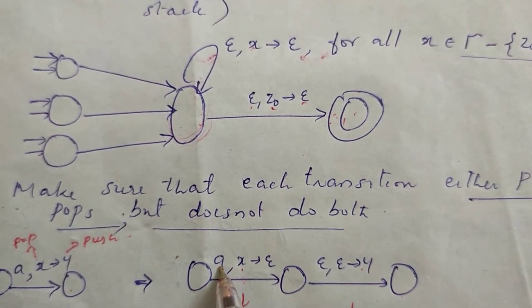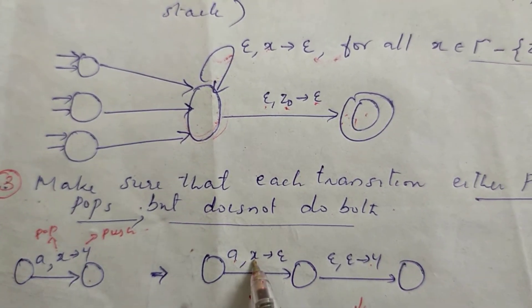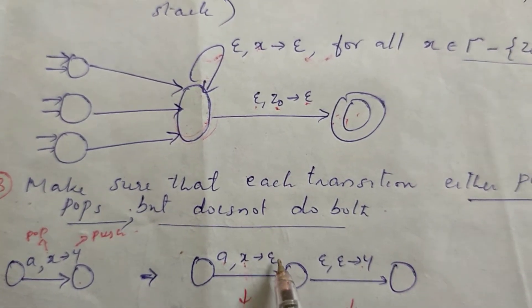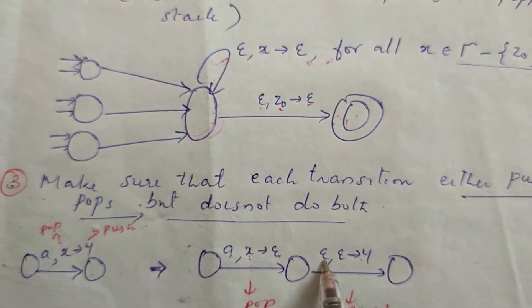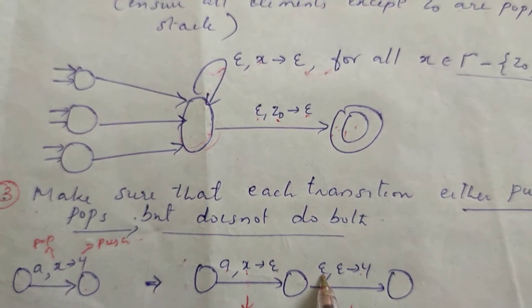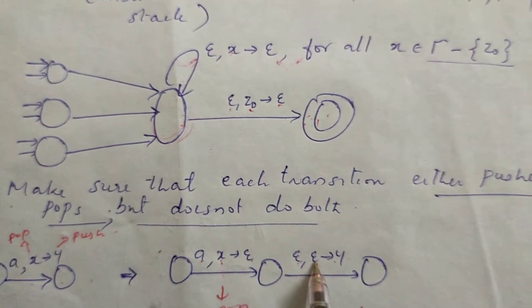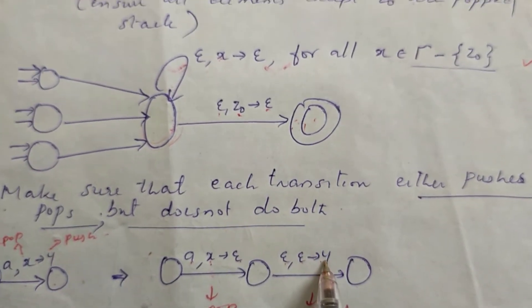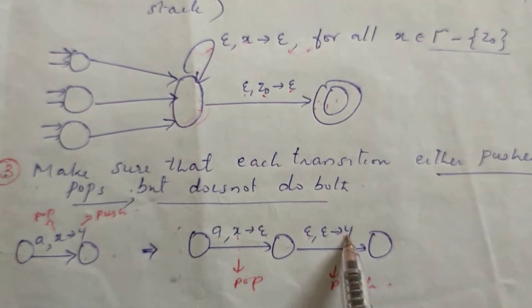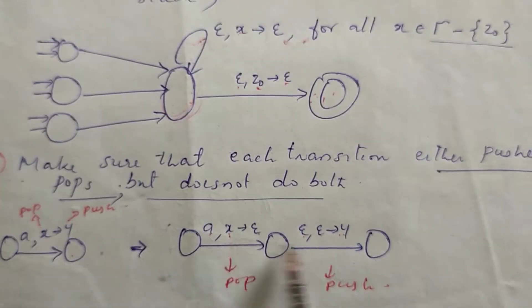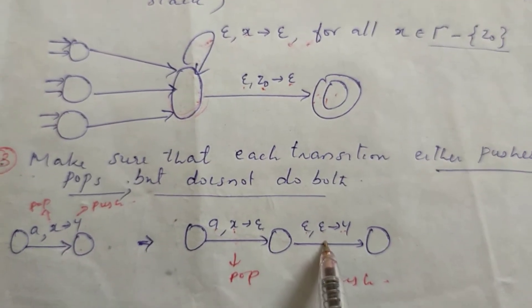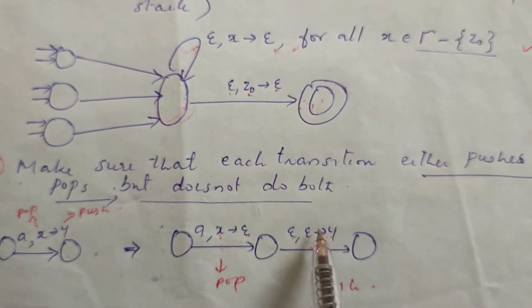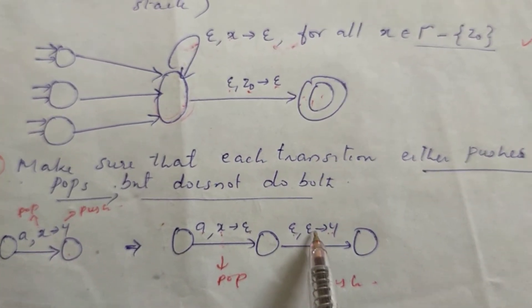Input symbol A: we are popping x and we are pushing nothing. Without any input symbol, we are popping nothing and we are pushing y to the stack. Then we split it. We are pushing the same in the third rule.